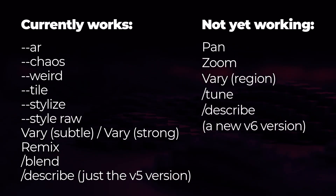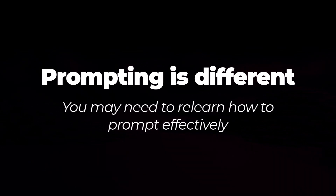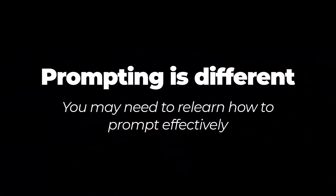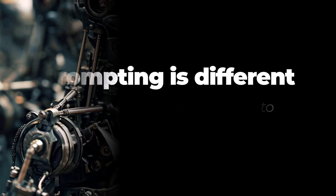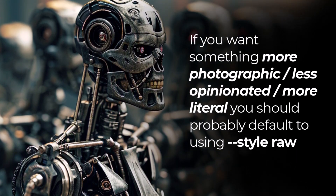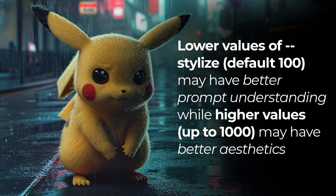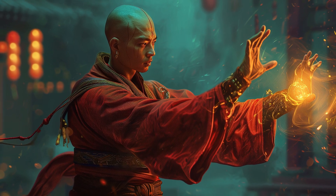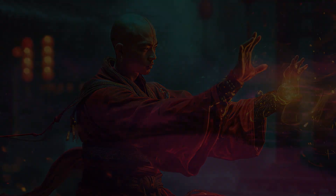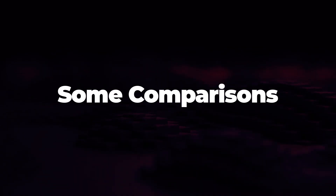At the moment you cannot use pan, zoom, vary region, or tune. However, there is a new v6 version of describe coming — it's just not available yet. Prompting with version 6 is different from version 5, and they've been quoted as saying you will need to relearn how to prompt. It's much more sensitive to your prompt. Words such as 'award winning,' '4K,' or '8K' are probably best avoided as they may have a negative impact on the overall image. If you want something more photographic or less opinionated, use style raw. This is the alpha release, not the final version, so let's check out a few comparisons between version 5.2 and this version 6 alpha.